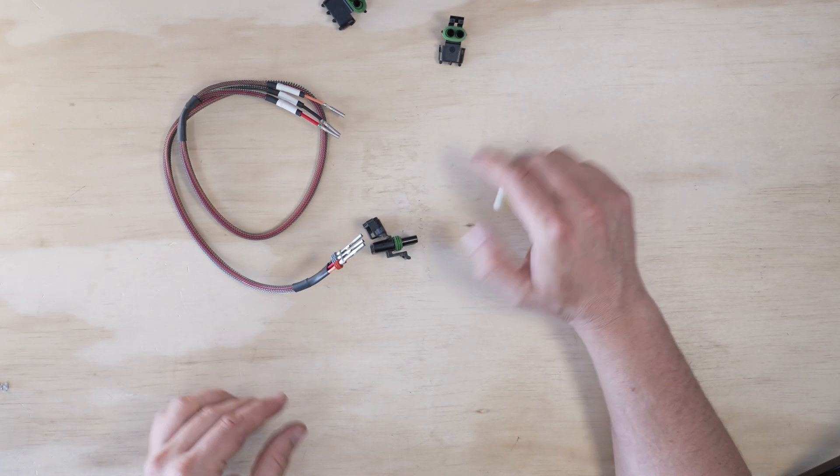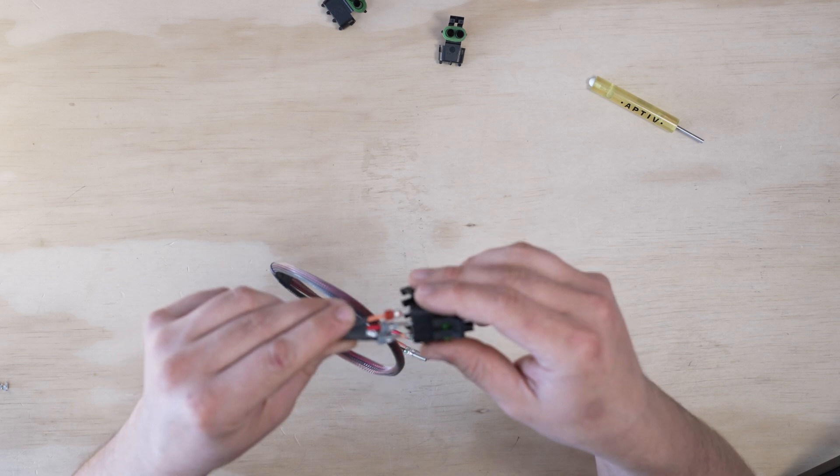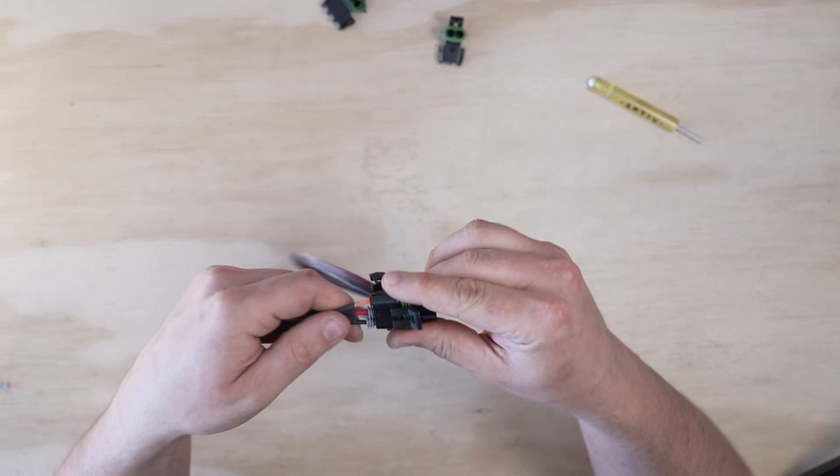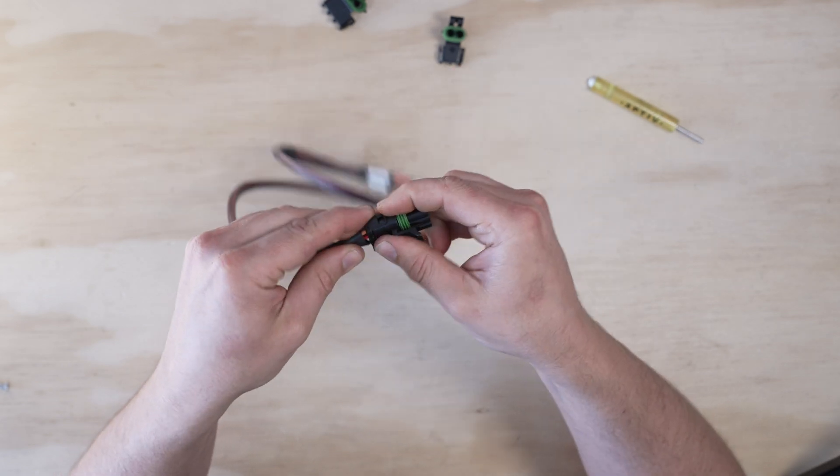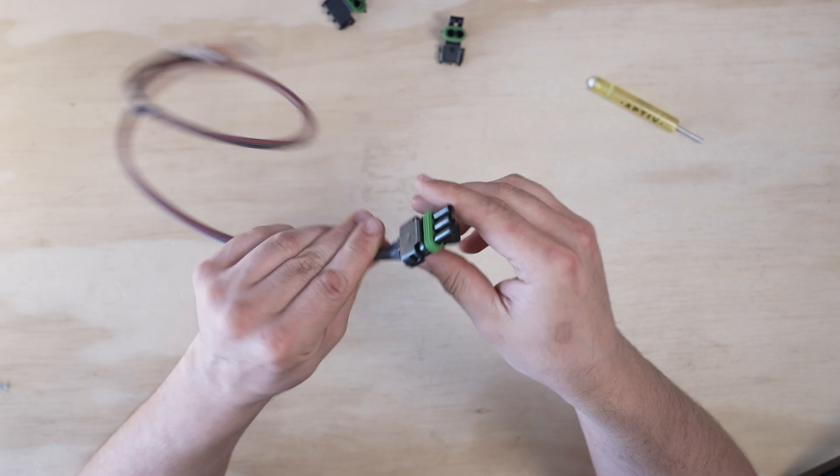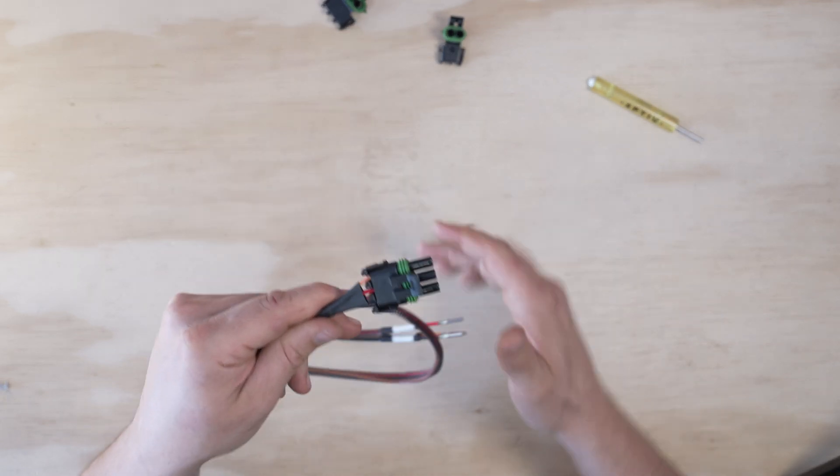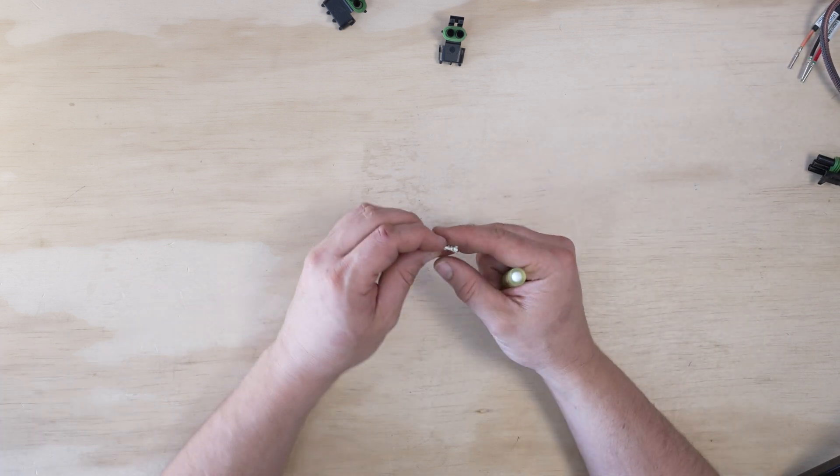So that's how you do the weather pack connector and then assembly is way easier. Honestly, these are kind of one of the harder connectors to get off. Assembly, you just push them in and then lock that and that's completely done, ready to rock again. So very easy assembly on weather pack connectors, but disassembly definitely a little bit harder.